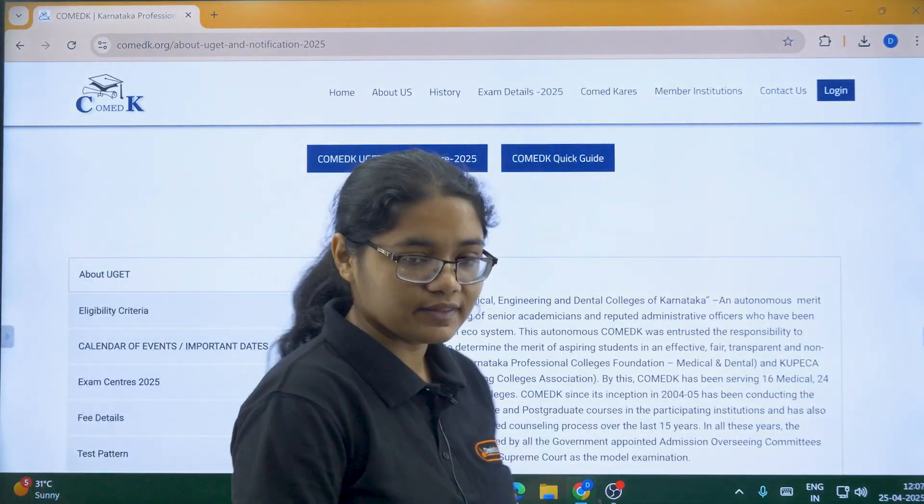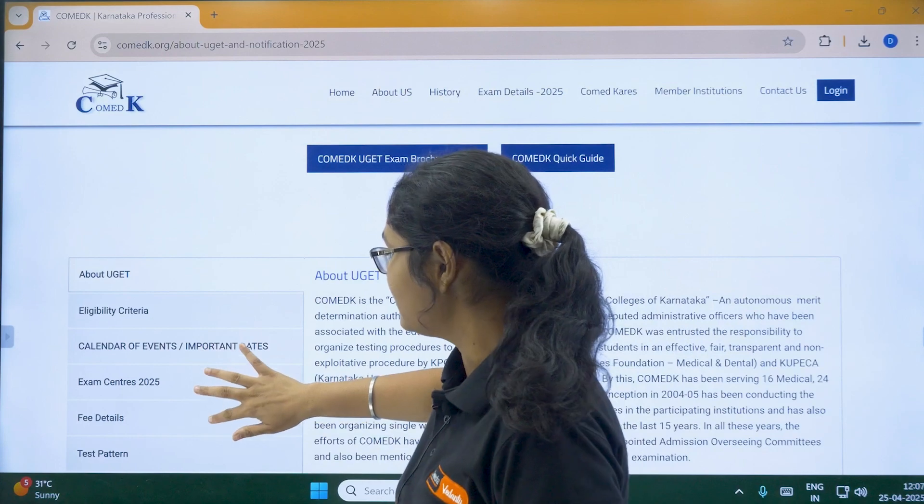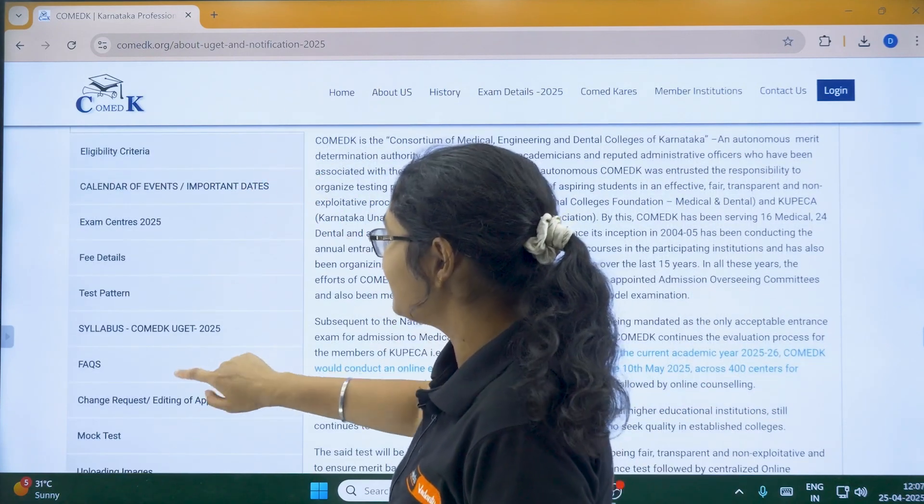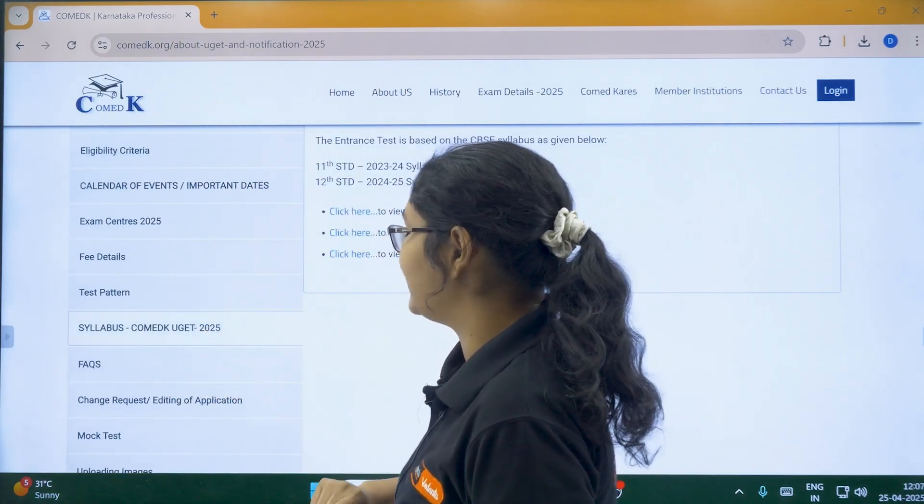Once you click on this, you can see on this side there's a menu bar. Click on syllabus COMET K UGCT 2025.